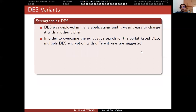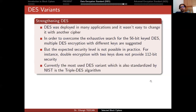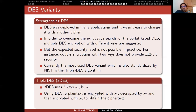To overcome exhaustive search on the 56-bit DES key, multiple DES encryption with different keys was suggested, but the expected security level is not achievable in practice. For instance, double encryption with two keys does not provide 112-bit security. Currently, the most-used DES variant — also standardized by NIST — is the Triple DES algorithm. It works by performing three DES operations: a plaintext is encrypted with K1, decrypted with K2, and then encrypted with K3 to obtain the ciphertext.